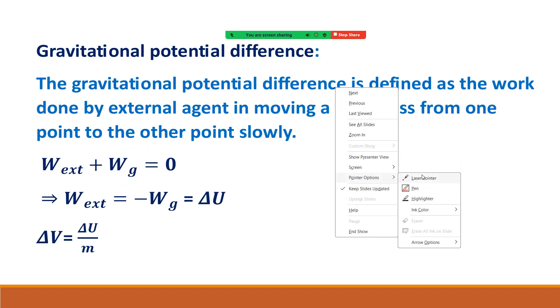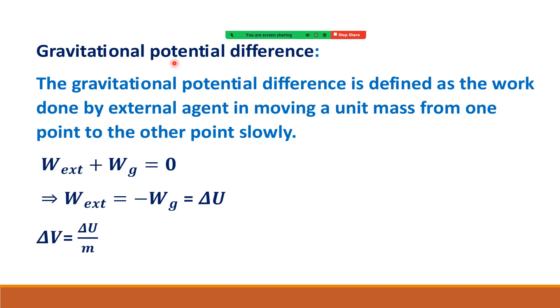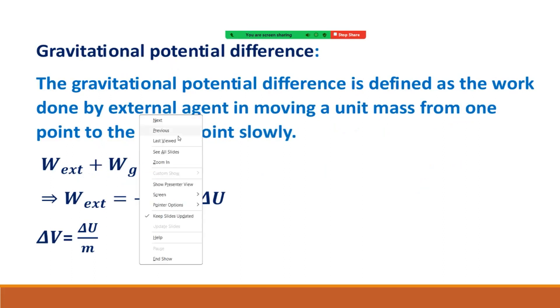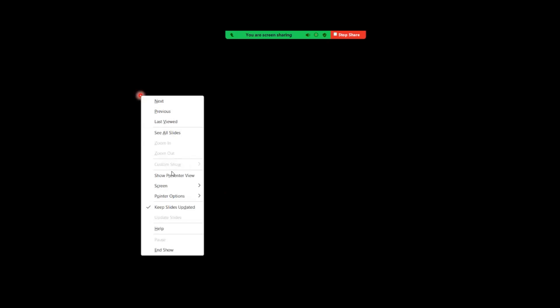Next: gravitational potential difference. The gravitational potential difference is defined as the work done by the external agent in moving a unit mass from one point to the other point slowly. So delta V equals work done by external force per unit mass.